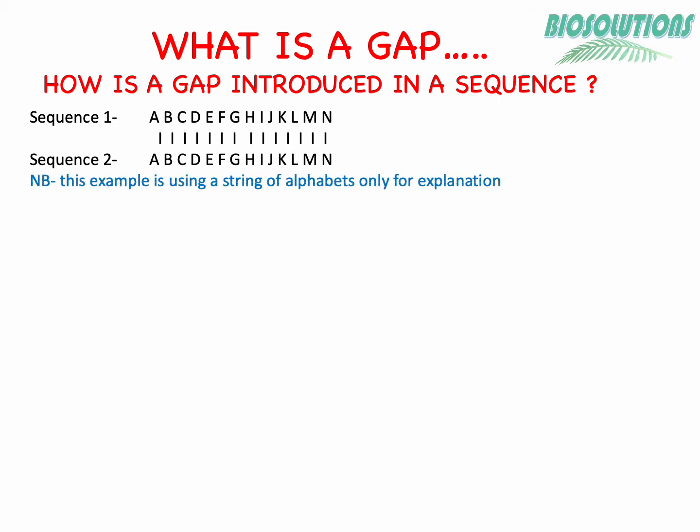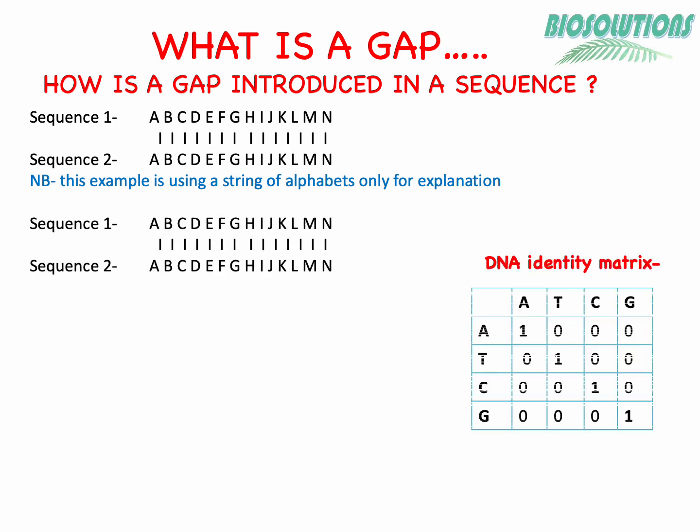BLAST compares both sequences and if both strings of sequences have exactly the same or identical nucleotide bases or residues, then it scores them highly due to a match. In this example I'm using a string of alphabets rather than nucleotide sequences. Using a DNA identity matrix we can assign a value of 1 to each match. Hence the score for this alignment will be 14.